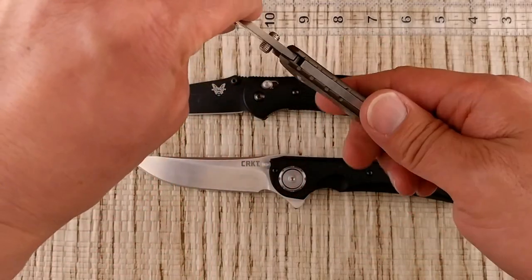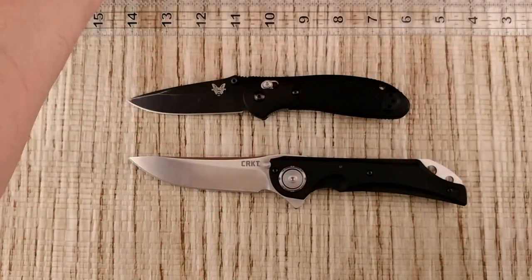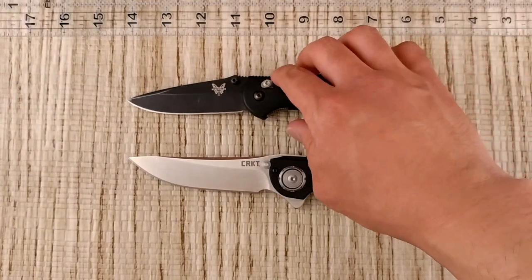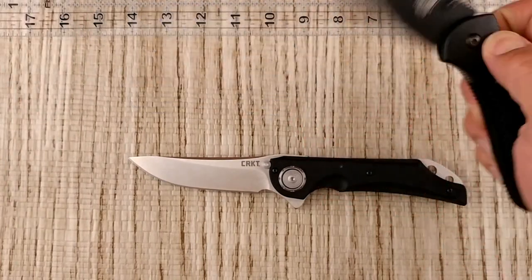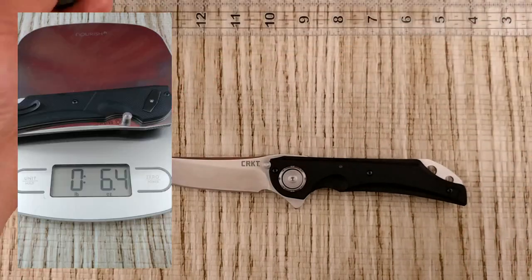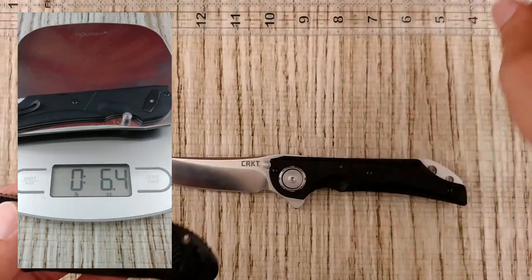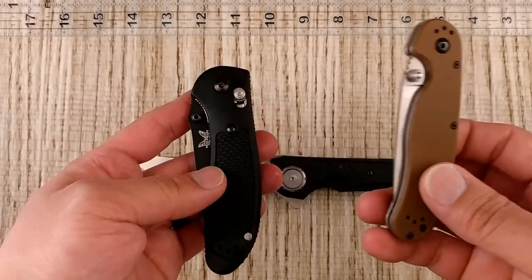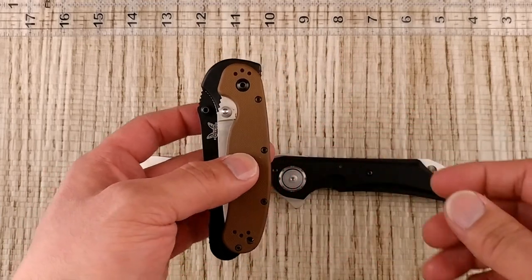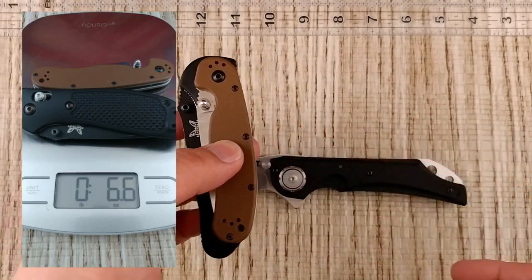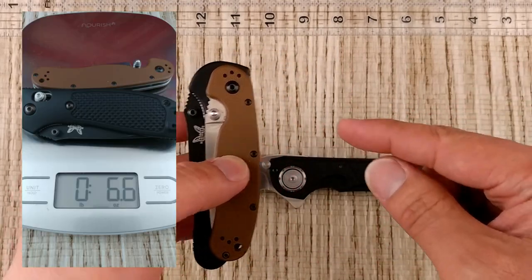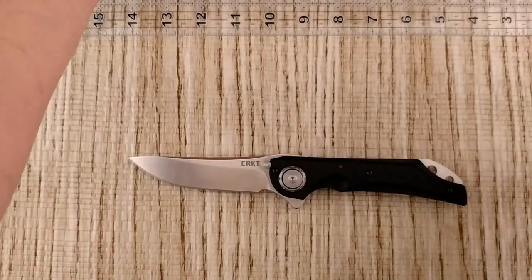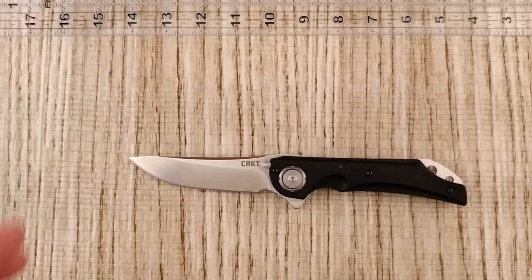This is the Flavio Ikoma deadbolt, and for the weight it's going to be a pretty heavy knife, about 6.4 ounces. To give you an idea, that's basically taking the full-size Griptilian and the Rat 2 together—that's about 6.6, this is 6.4 ounces.